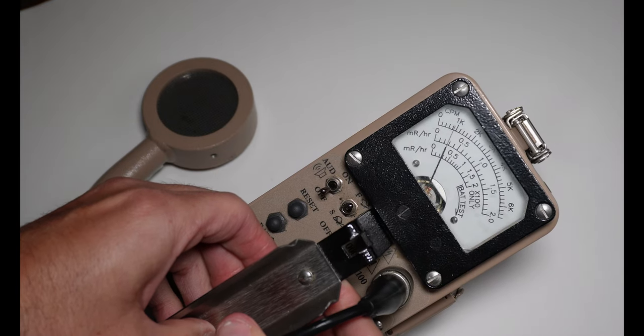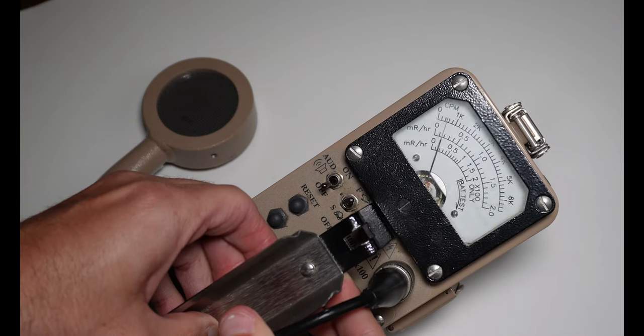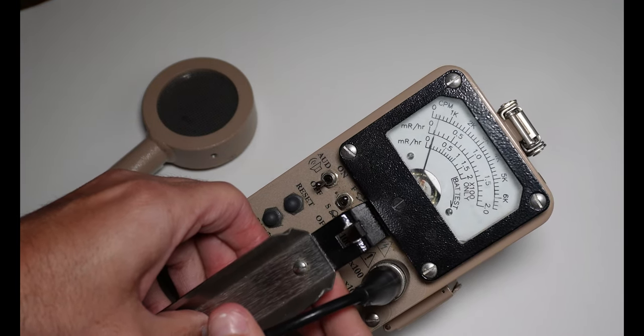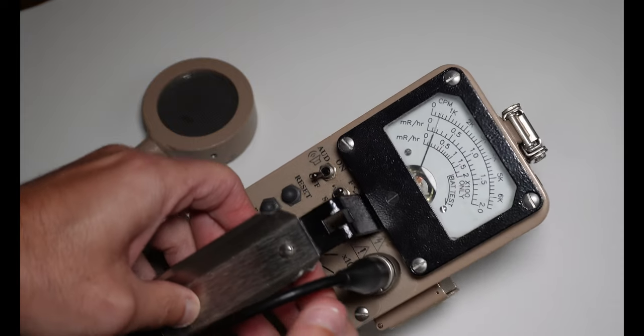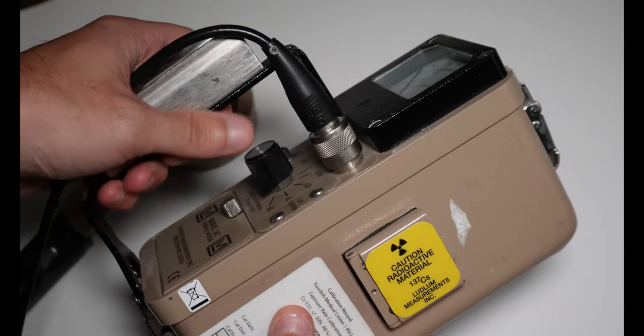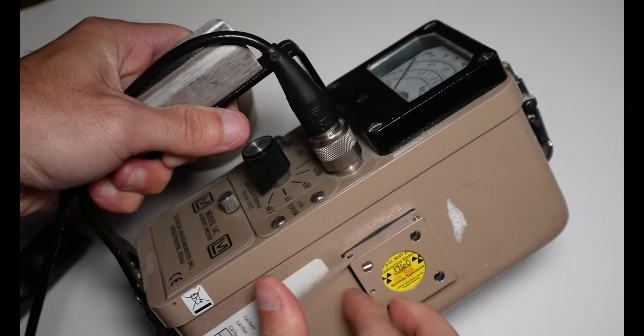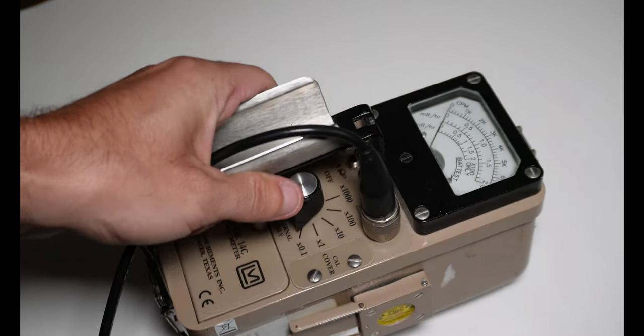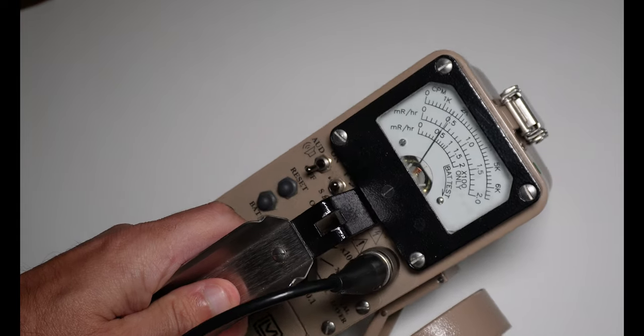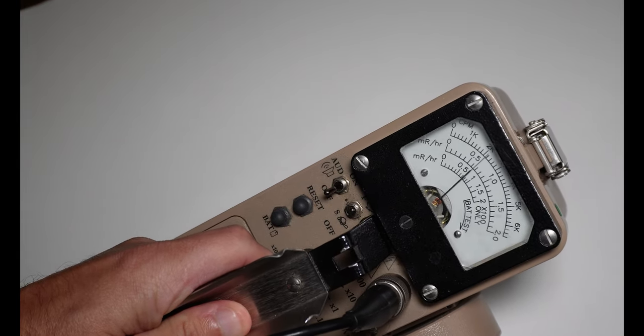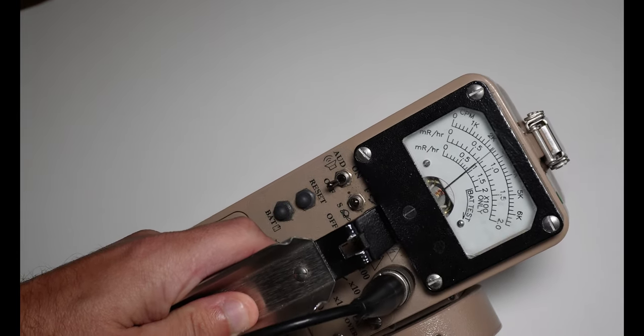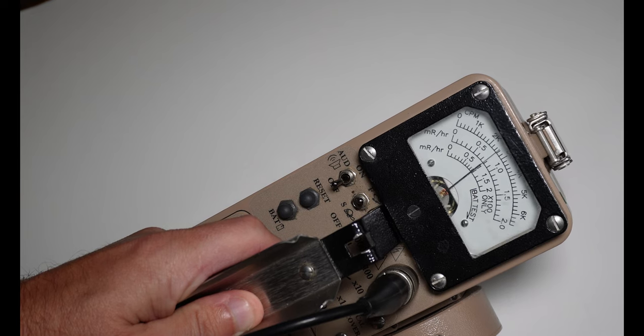The next step is we want to make sure that we get a good response from the instrument by checking it against the check source. So recall that the check source for this survey meter is on the side. We're going to open up and we're going to put the pancake detector against the side of the source and we're going to make sure that we get a response here.